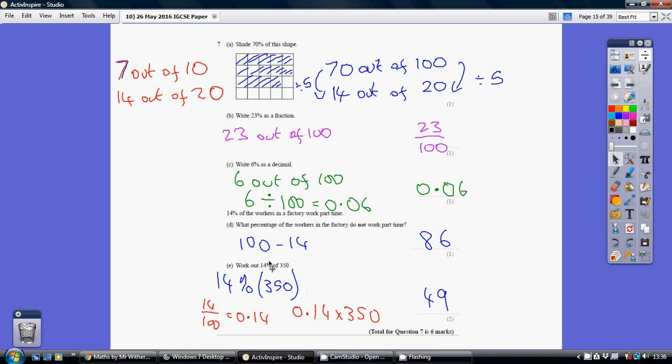14% means 14 out of 100, which is 0.14. So we need 0.14 of 350. So 0.14 times 350, which is 49.